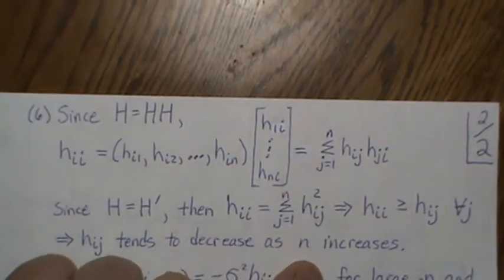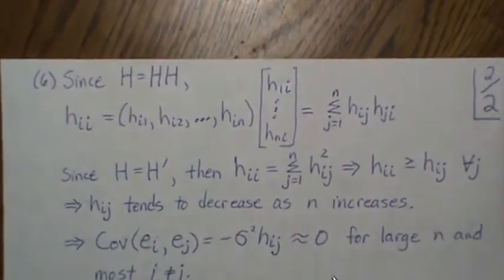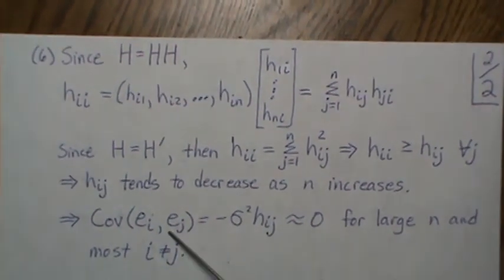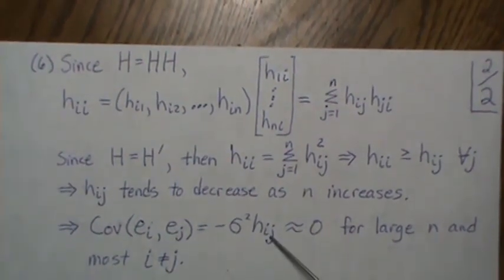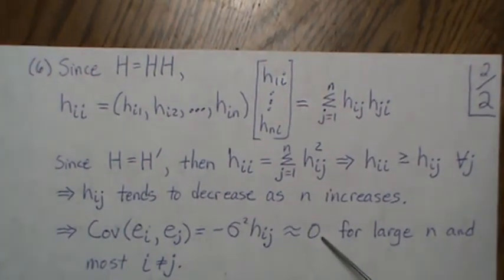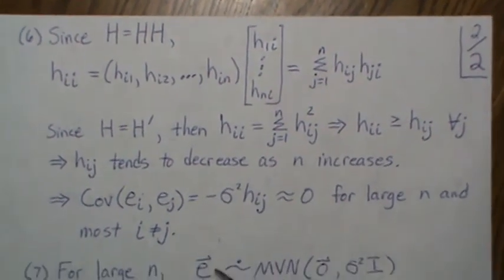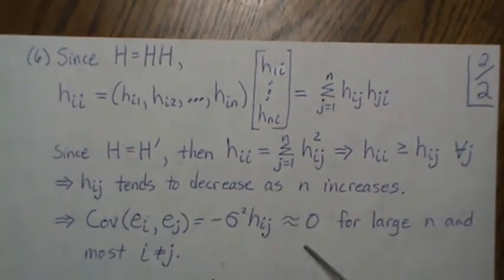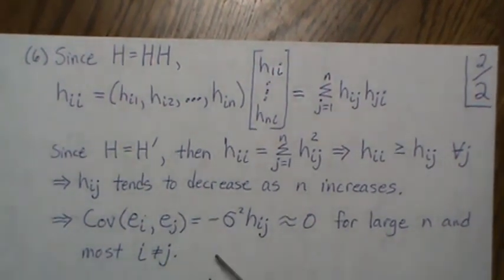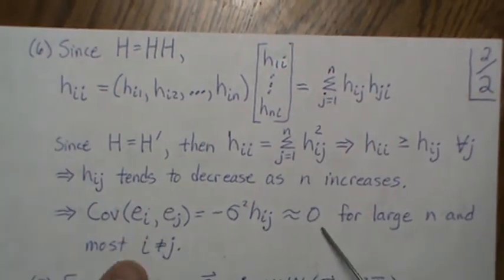So that implies that the covariance between any two residuals tends to go to zero, and that's for large n and most i not equal to j. So that's a good thing. The residuals, when n is large enough, have covariance zero so they're independent.